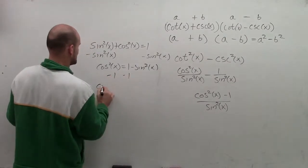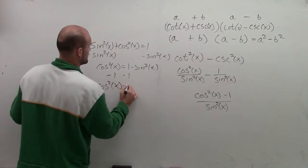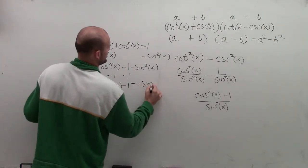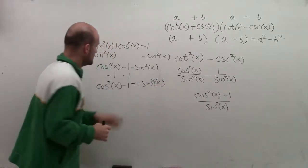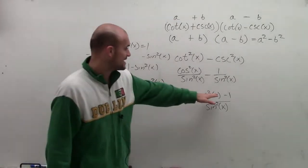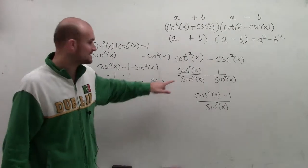Then subtract the 1 on both sides, and I get cosine squared of x minus 1 equals negative sine squared of x. So therefore, the cosine squared of x minus 1, that is equal to negative sine squared of x.